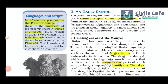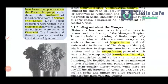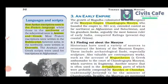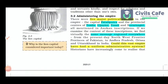Magadha later developed into the Mauryan Empire under Chandragupta Maurya, who founded the empire in 321 BCE. We get to know about the Mauryas from Megasthenes' Indica, the Arthashastra by Kautilya or Chanakya, and Ashoka's inscriptions. The Ashokan inscriptions were in Prakrit, but in the northwest they were in Aramaic and Greek. The scripts used were Brahmi, and sometimes Kharosthi in the northwest; Aramaic and Greek scripts were used for inscriptions in Afghanistan.